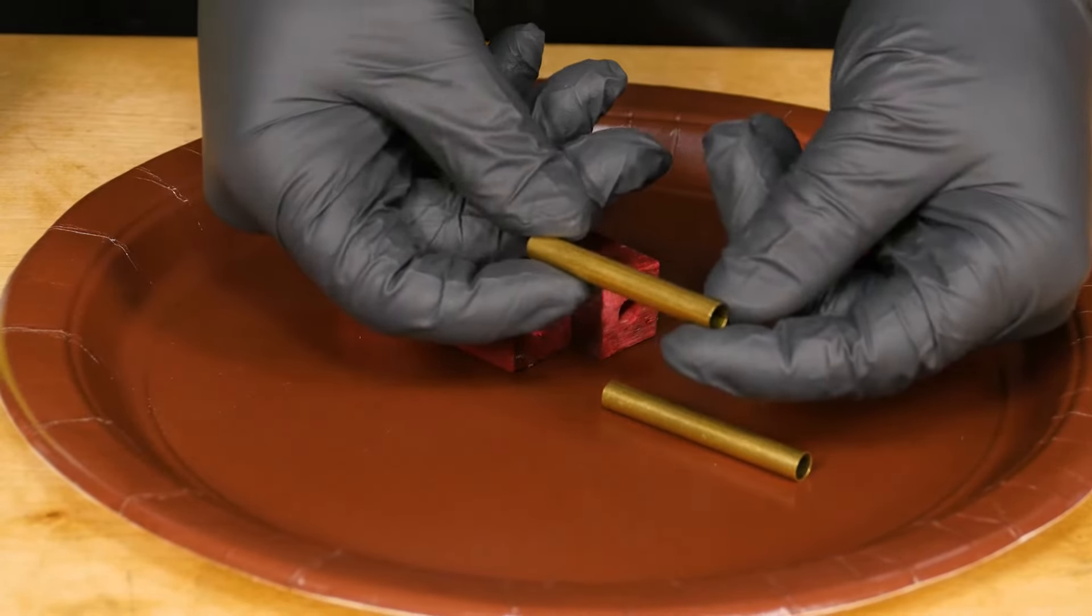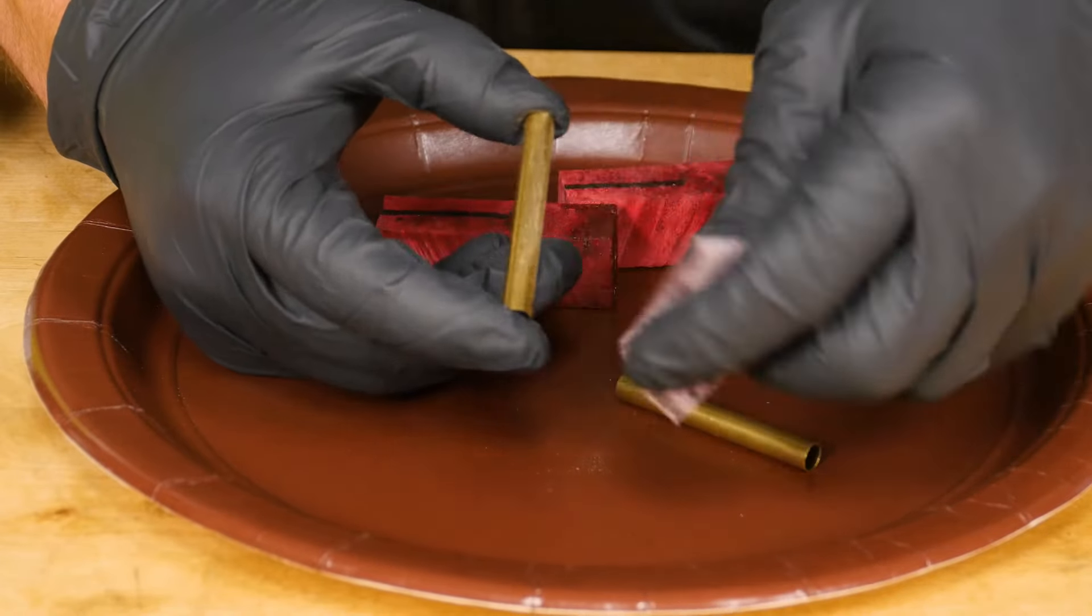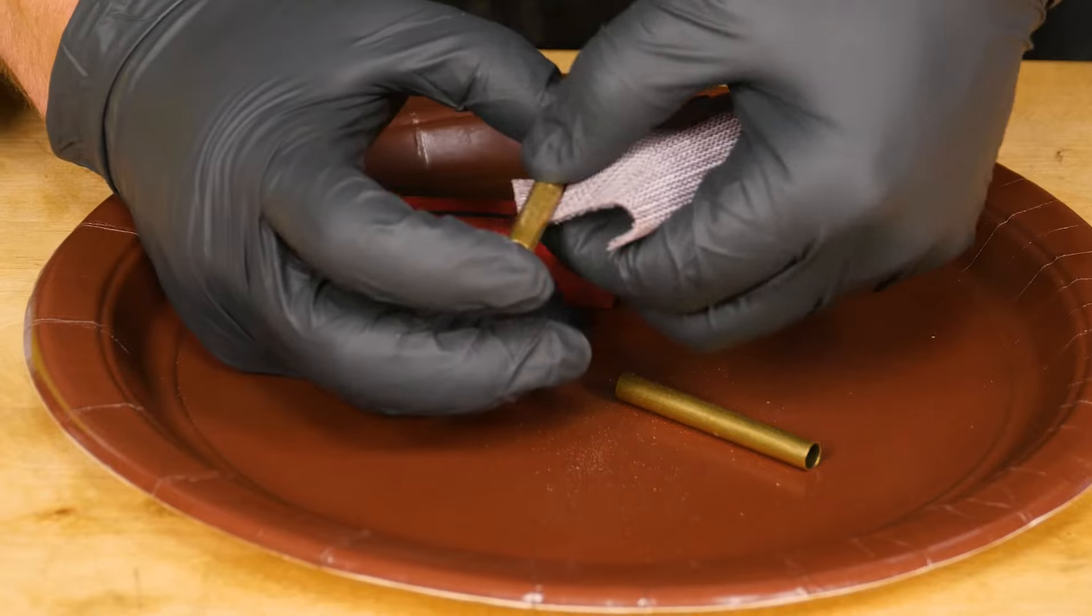After drilling, it's time to glue the brass tubes into the blanks. Start by lightly scuffing the tube with 220 grit sandpaper to give the glue a better bond.